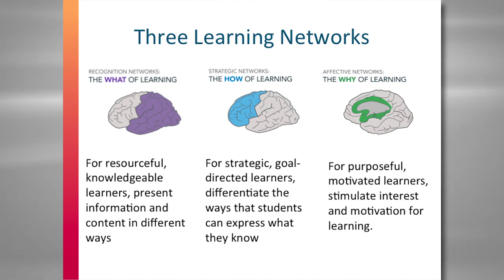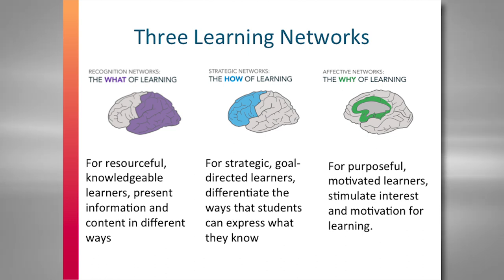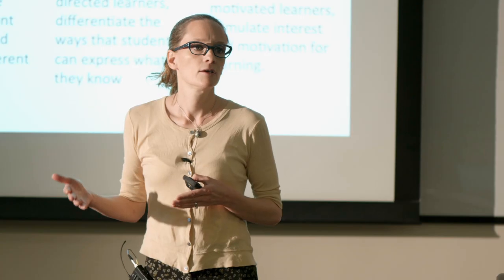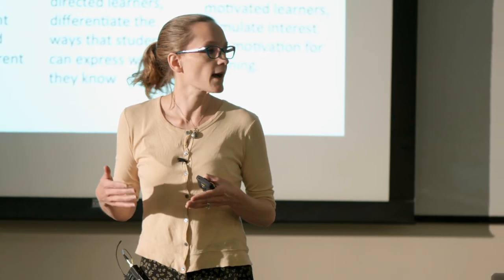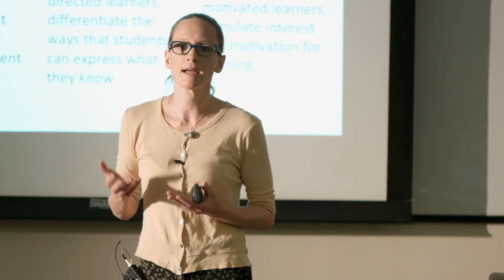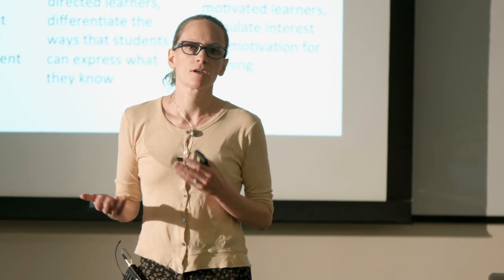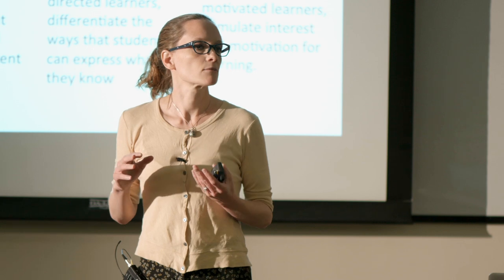The first area is the recognition networks — how people perceive information through the senses. This is the back area of the brain. There's a wide range in how people perceive information: if you're hearing impaired, you'll get information from a webcast very differently than someone who's not. You need to plan for multiple representations of information to attend to differences in recognition.